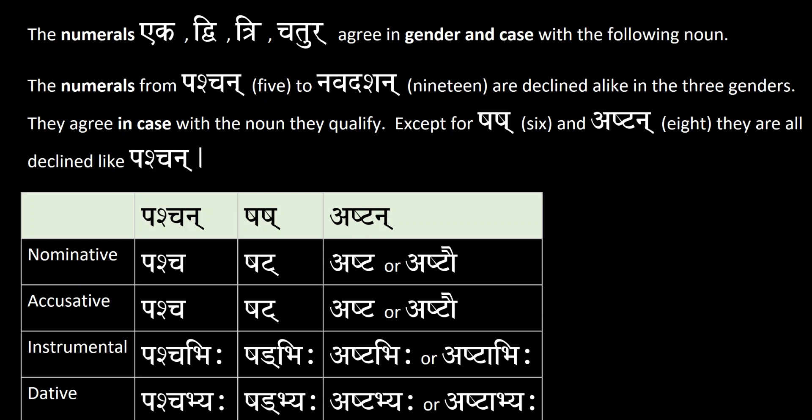However, numbers 5 to 19 — the numerals from Pañcan, which is 5, to Navadashan, which is 19 — are declined alike in the three genders.